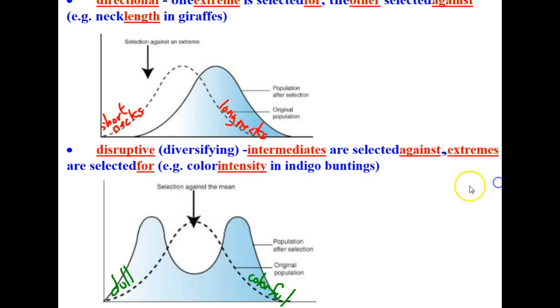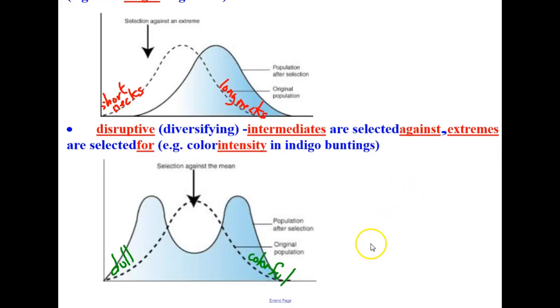You can see here again the dotted line is the original population with the dull colored indigo buntings being selected for and the colorful indigo buntings being selected for. But the intermediate colored birds are selected against. This creates two peaks on the graph here of the population after selection.